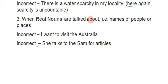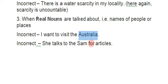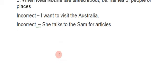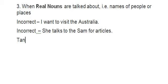Third: when talking about proper nouns — names of people or places — we do not use articles. For example: 'I want to visit the Australia' is wrong — correct is 'I want to visit Australia'. 'She talks to the Sam' is wrong — correct is 'She talks to Sam'. Remove 'the' and it becomes correct. Okay, your chapter on articles is now complete. Thank you, keep watching and learn more with us!